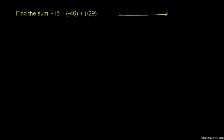Negative 15 might look something like this. So this is zero, and this is negative 15. I can represent negative 15 as an arrow that points from zero to negative 15. The length of the arrow is the absolute value — it's the distance from zero. So the length here is 15, and the negative says that we are pointing to the left. The absolute value is 15; that's the length of that arrow.